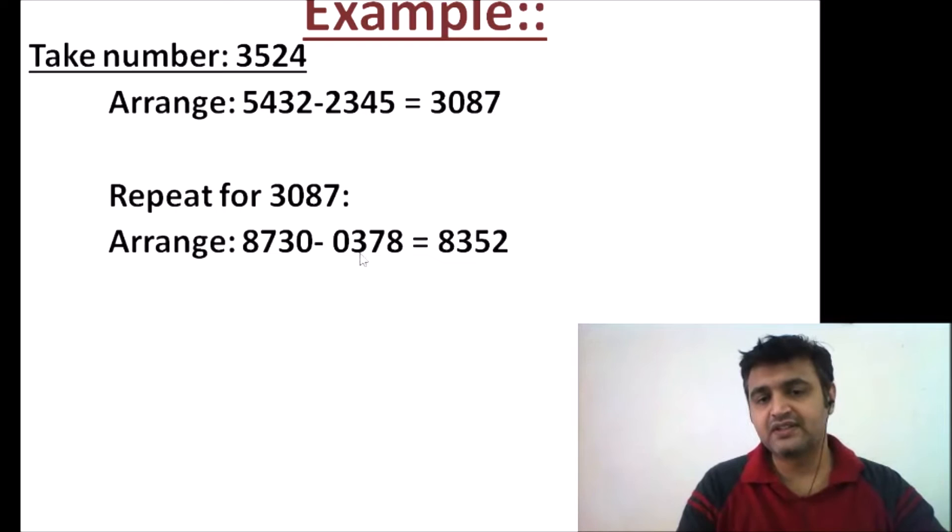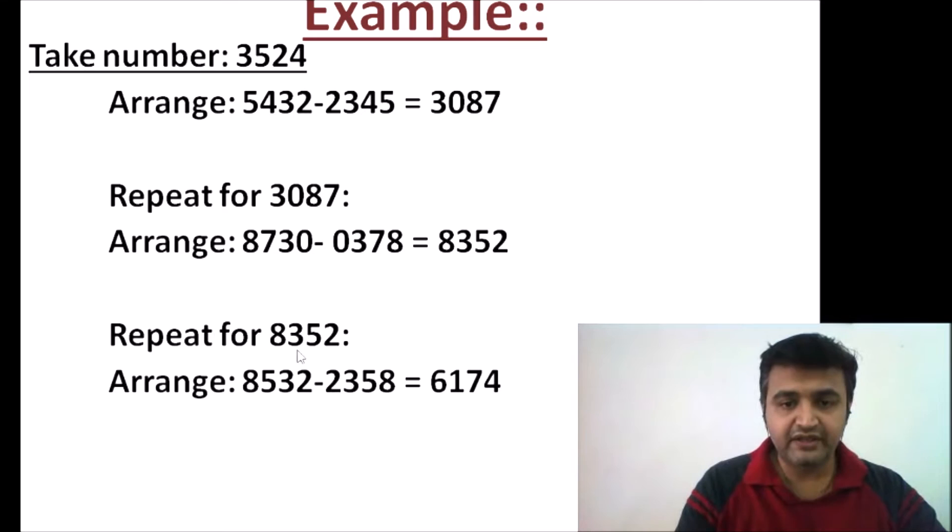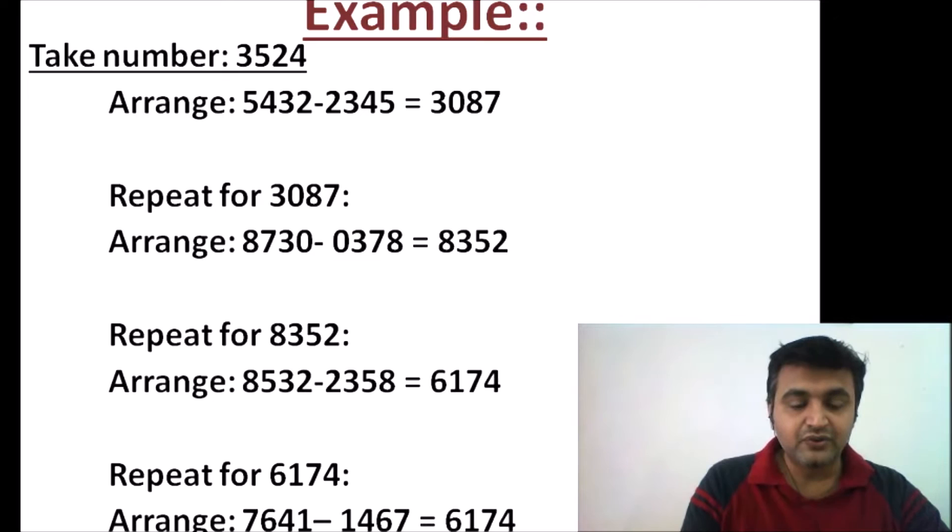For 8352, descending minus ascending gives 6174. So in the third step, I arrive at 6174. Now what if I repeat the same procedure for 6174? The descending order is 7641 and ascending is 1467. If I subtract, I again get 6174.